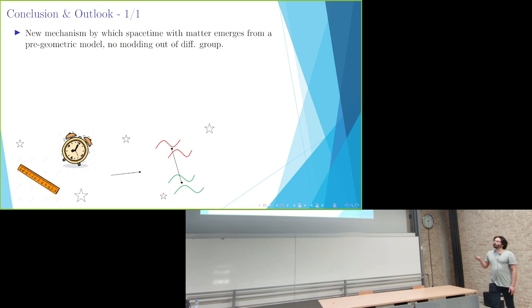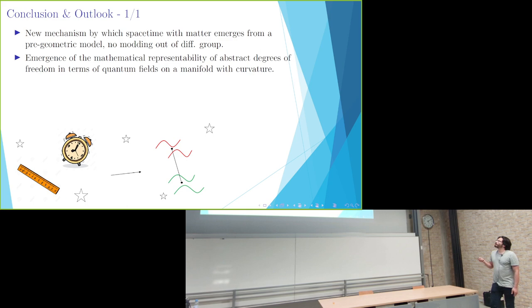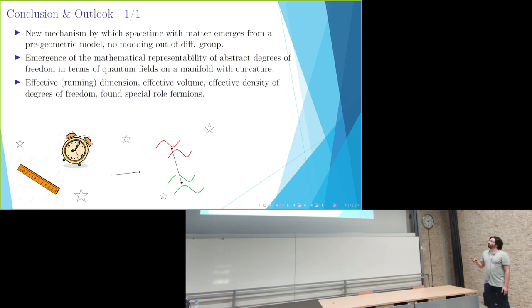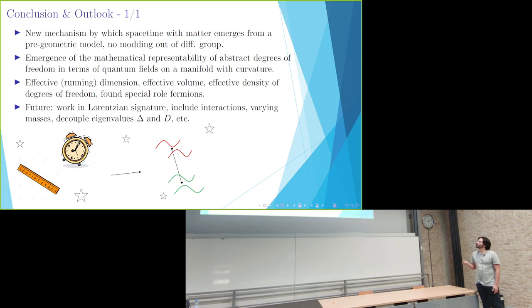And with this, I'll go now to the conclusions and some outlook. We kind of investigate here a new mechanism by which we have space-time or geometry, because it's Euclidean, with matter emerging from a pre-geometric model where we didn't have to deal with any modding out of the diffeomorphism group. You could see this in the perspective that whenever we have a mathematical representability in terms of quantum fields on a manifold with curvature, we can call that this is an emergent model of geometry. We found effective dimension and even explored a setting where we have a running dimension. We could calculate an effective volume and an effective density of degrees of freedom with a special role for fermions.